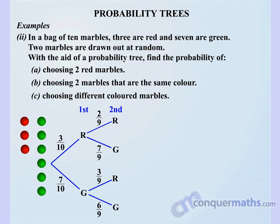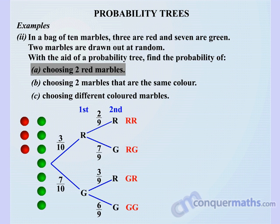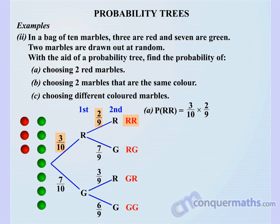Once you've got your probability tree the rest is easy. The possible outcomes are: red-red, red-green, green-red, and green-green. For Part A — probability of choosing two red marbles — we multiply 3/10 by 2/9, and we end up getting 1/15.